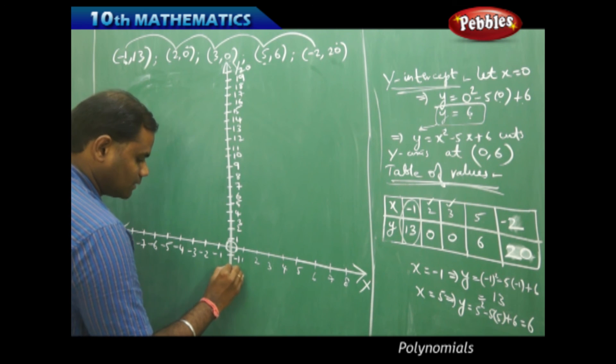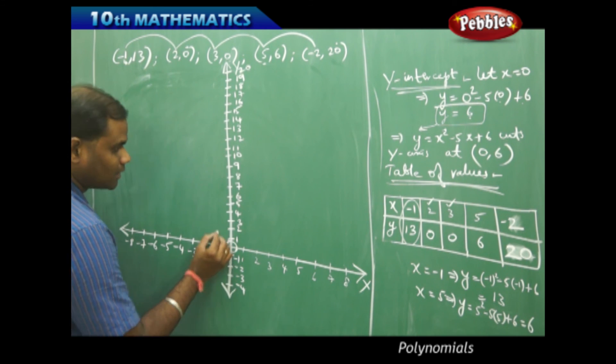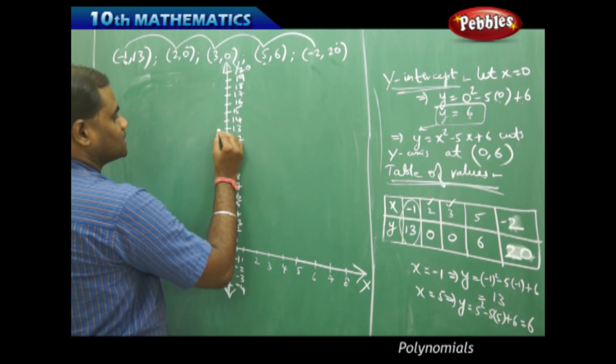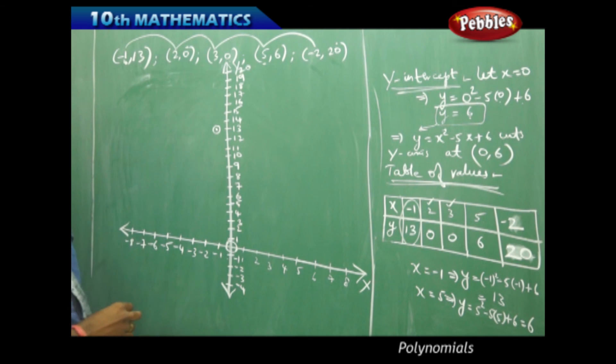And of course, with this, this would be negative 1, negative 2, negative 3, negative 4, etc. Now, let me start plotting each of the points as obtained here. Negative 1 and 13 starts with minus 1 on the left and 13 on the y axis, so this would be the point where the first coordinate lies.